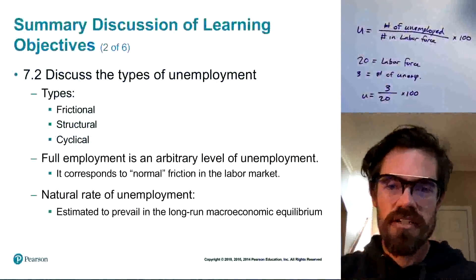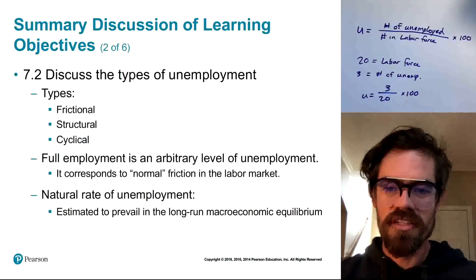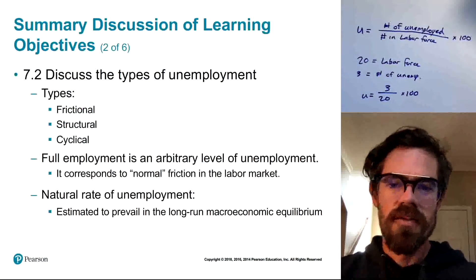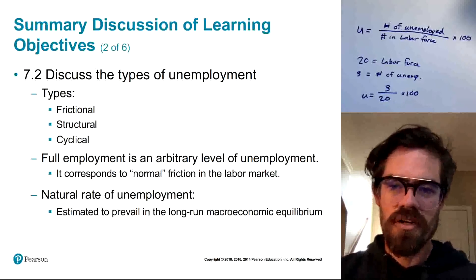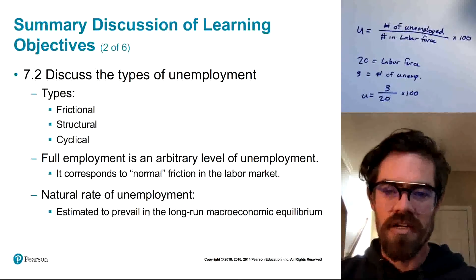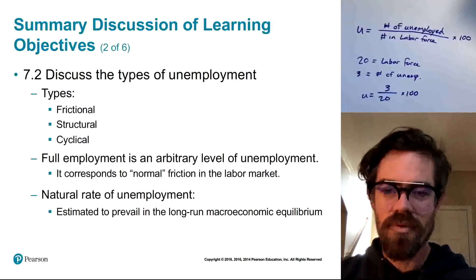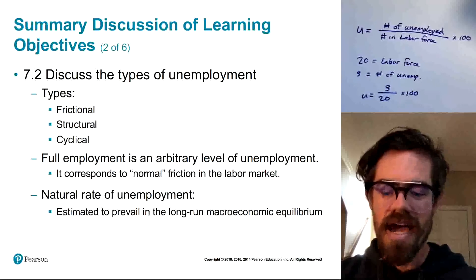In Section 2, we talked about the different types of unemployment: frictional, structural, and cyclical. Make sure you understand what those different types are. We also talked about full employment — the arbitrary level of unemployment corresponding to normal friction in the labor market — and the natural rate of unemployment, which is the estimated long-run level of unemployment when the economy is in long-run macroeconomic equilibrium. This will be important when we build our first macroeconomic model: the aggregate demand–aggregate supply model.